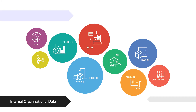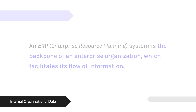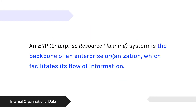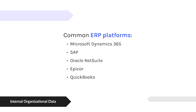There are going to be acronyms that we need to familiarize ourselves with. The first acronym we're going to come across is an ERP, which stands for Enterprise Resource Planning. Some of the platforms that offer ERPs include software such as Microsoft Dynamics 365, SAP, Oracle NetSuite, Epicor, and even QuickBooks is a form of an ERP.